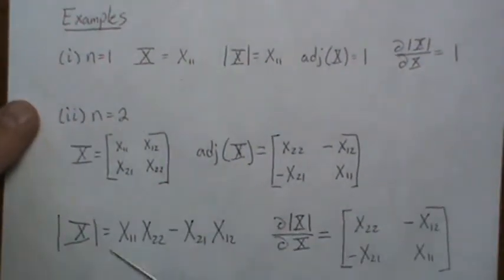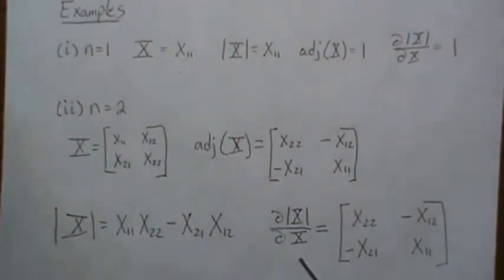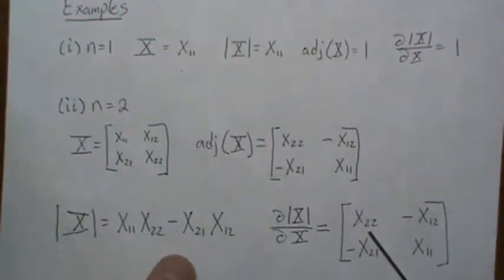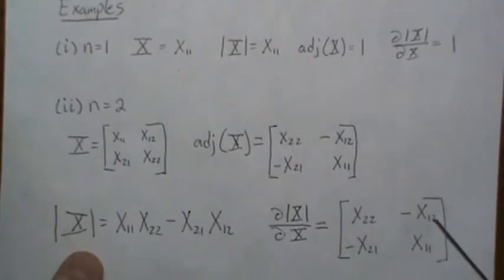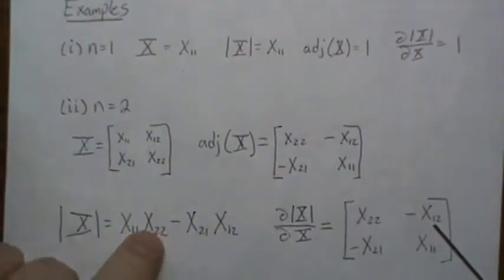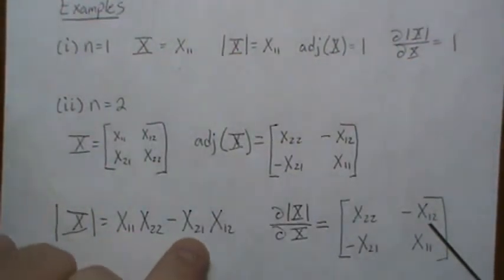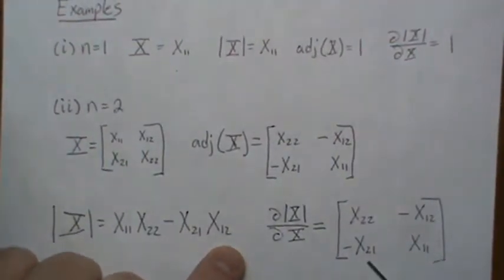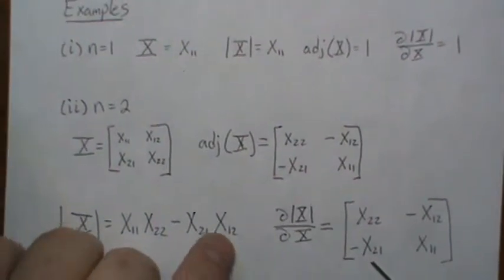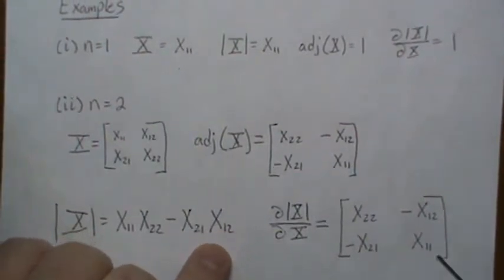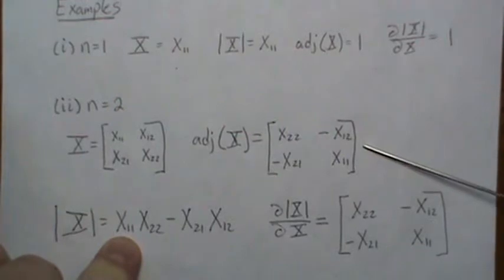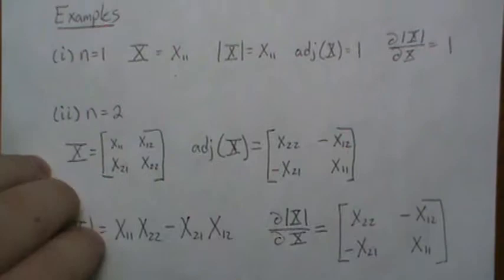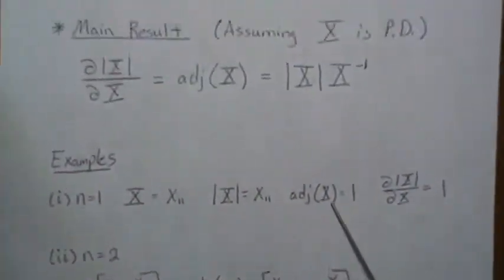The determinant of the 2x2 matrix is x11*x22 minus x12*x21. Now taking partial derivatives: the derivative with respect to x11 gives x22; going down the column, the derivative with respect to x21 gives -x12; the derivative with respect to x12 gives -x21; and the derivative with respect to x22 gives x11. This matches exactly the adjunct matrix, confirming the result.